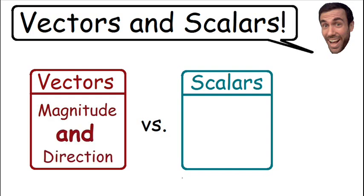Now when I say magnitude, magnitude means the size of something. So with a vector quantity we know the magnitude or the size and we know the direction it's moving towards. Now let's talk about scalars. A scalar quantity only has a magnitude. So we know the size of a scalar quantity but we do not know the direction.